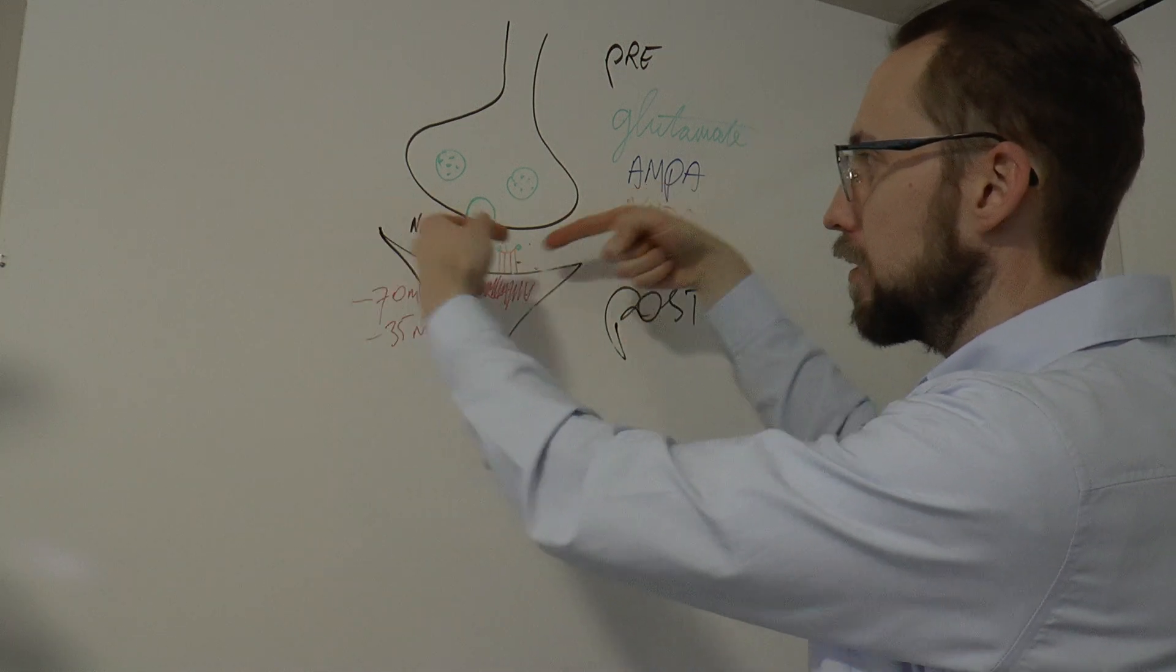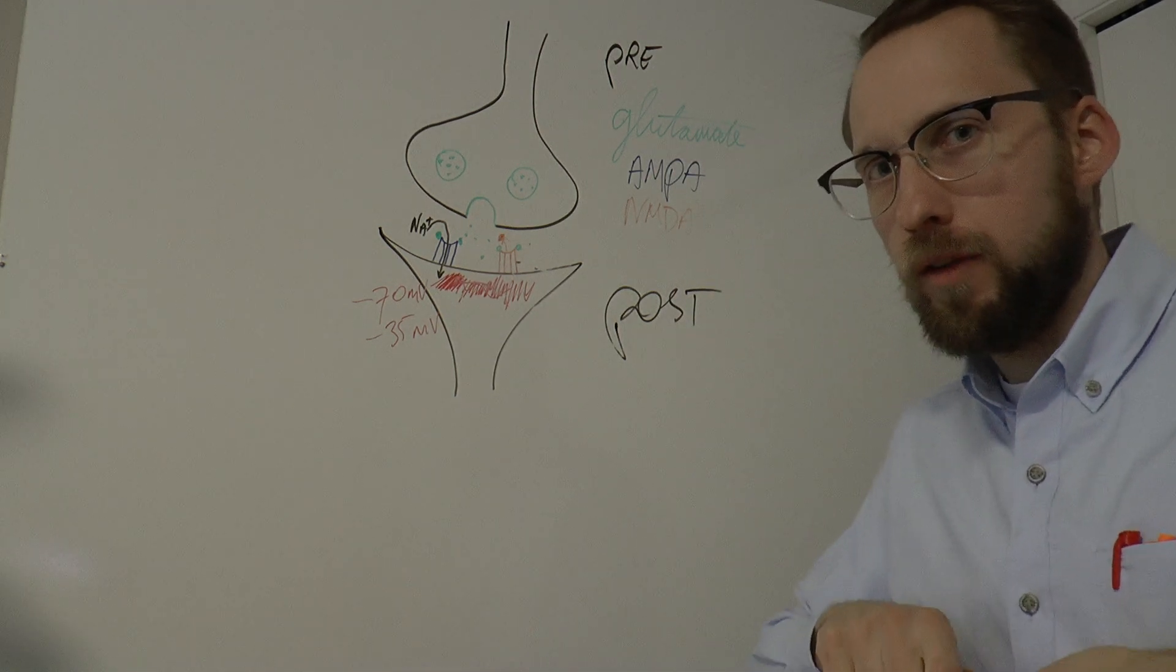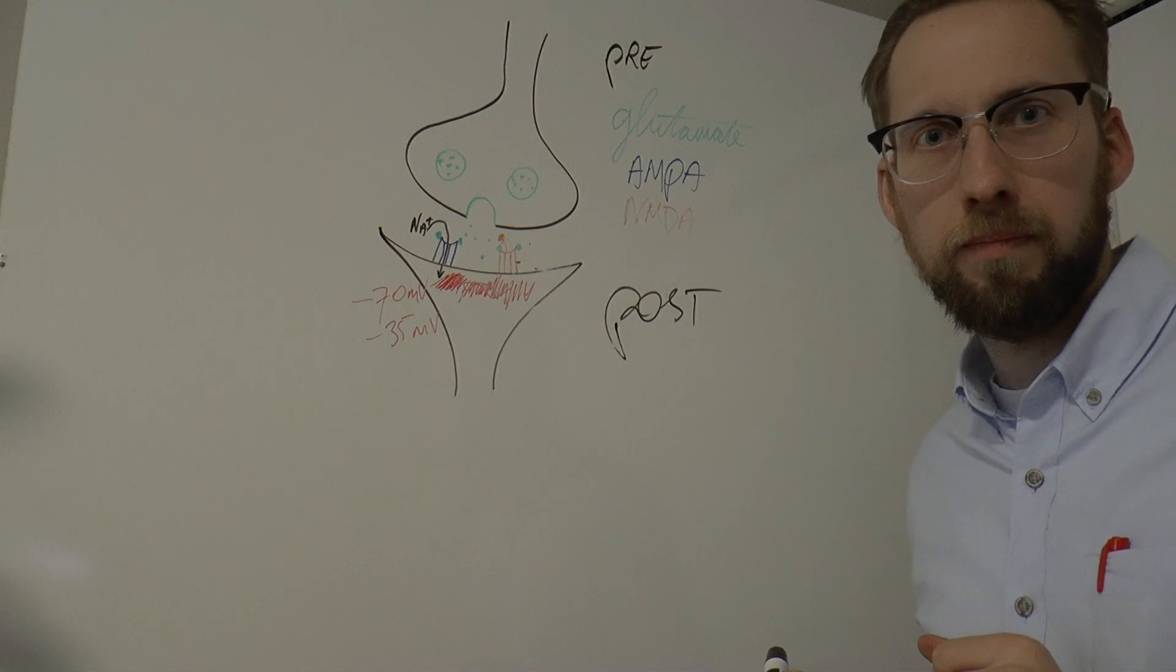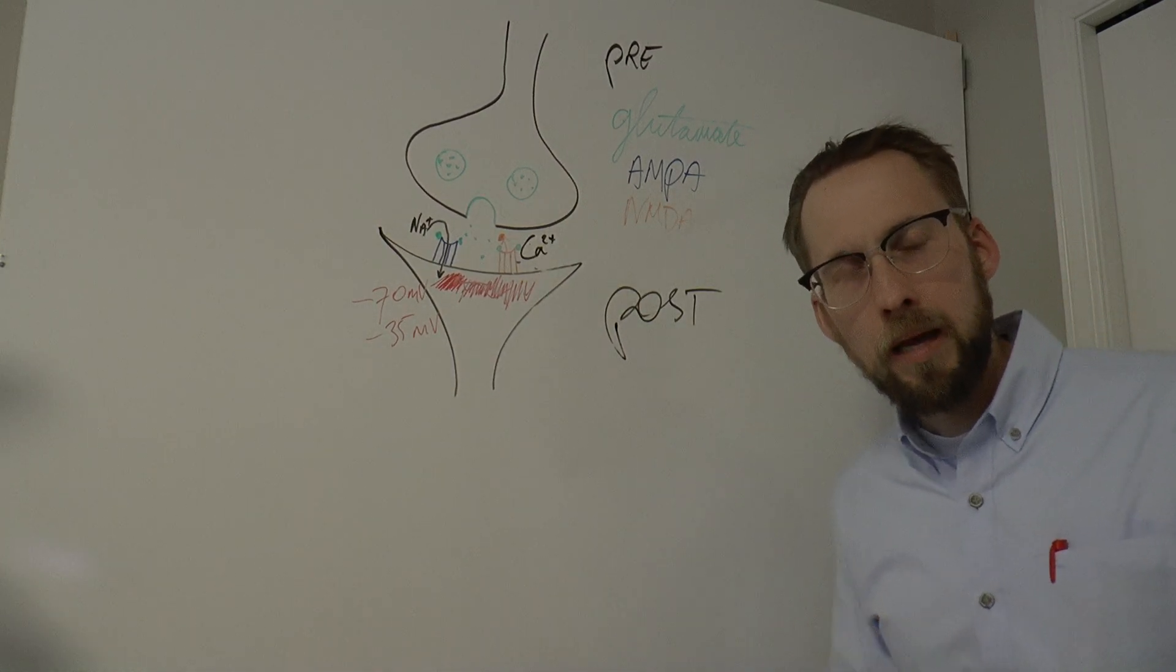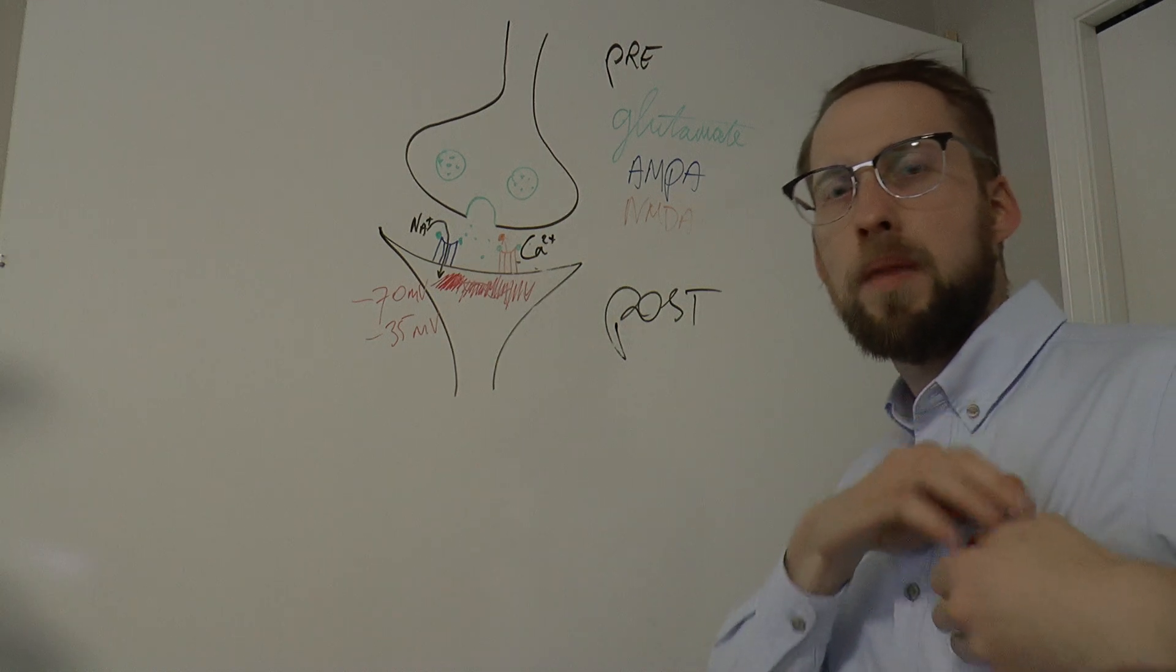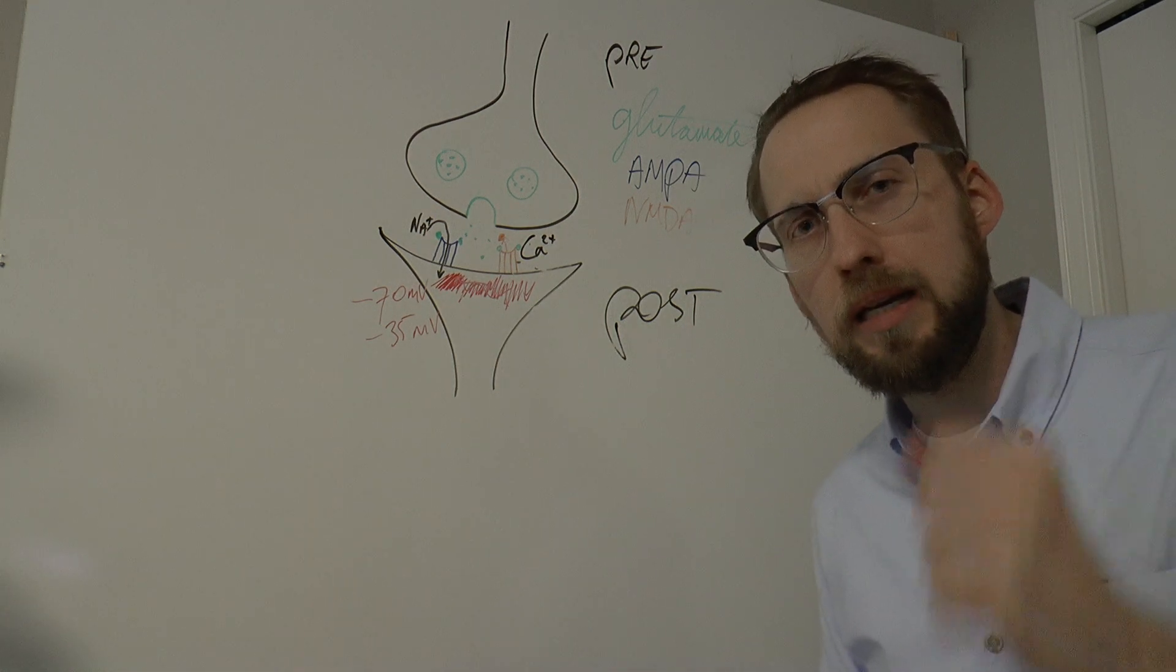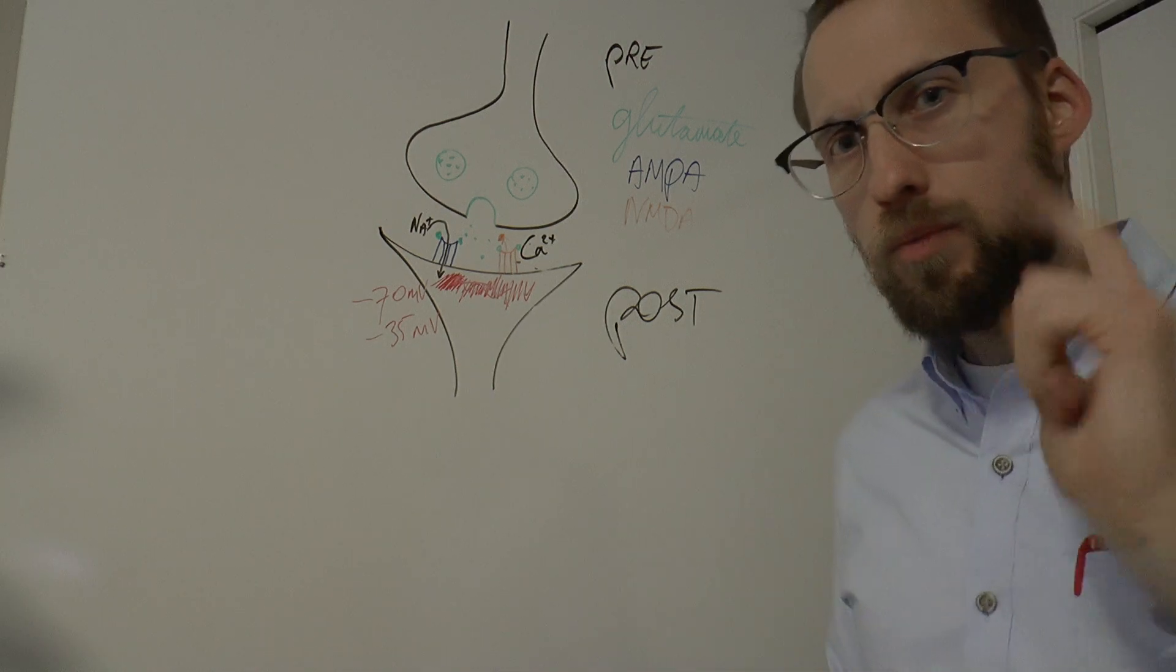And then what happens? Well now glutamate binding to the NMDA receptor, ion pore opens. What ions flow in? Well interestingly enough, you might think more sodium but it's not that. This is an ion pore for a different type of ion. Calcium. Calcium. Calcium. And when calcium flows in, something interesting happens. That happens in there, in the receiving neuron. That calcium basically activates a bunch of chemicals called protein kinases. You don't have to know that for the test. Protein kinases. And these protein kinases, they do stuff. What kind of stuff? Well, first part. This is what I want you to remember.